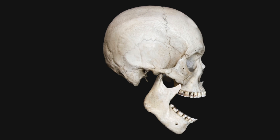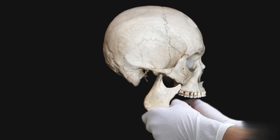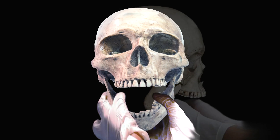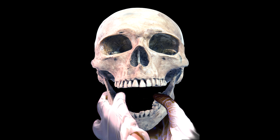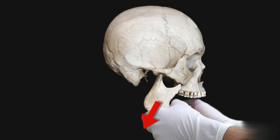In order to perform this reduction, the doctor places the thumbs over the back jaw molars. In order to protect the thumb, gauze should be wrapped around the thumb. A strong and firm push is then performed, oriented both downwards and back.